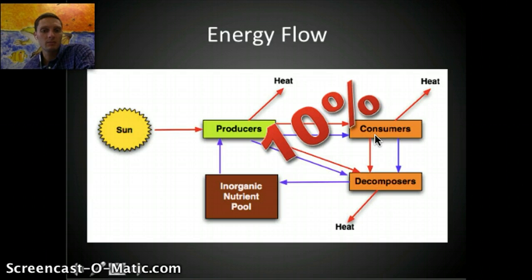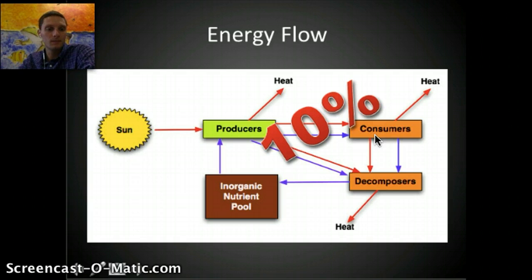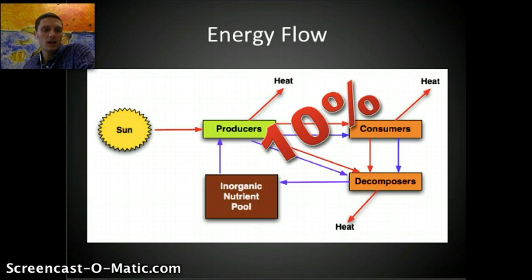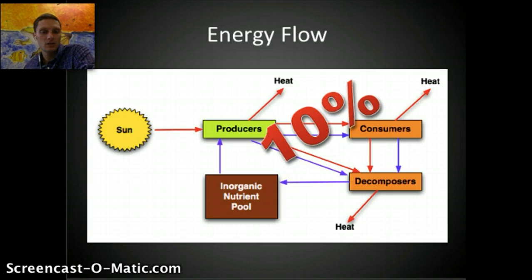Feeding relationships can be structured like a pyramid, with a large number of individuals at the bottom and fewer and fewer moving up. Not all food can be digested, so some energy is lost as waste. Not all organisms at each trophic level are eaten, so some energy doesn't transfer at all. The key thing to remember is that energy flow is not 100% efficient — only about 10% of energy is transferred at each level.